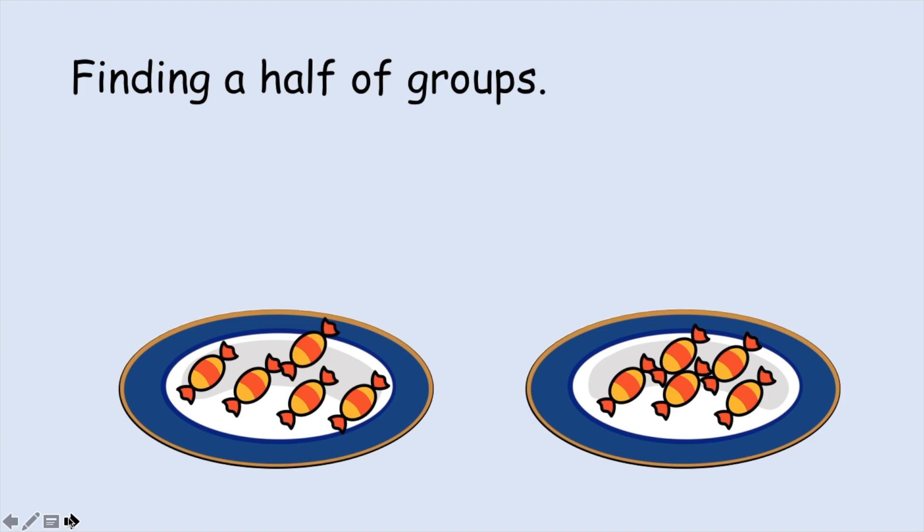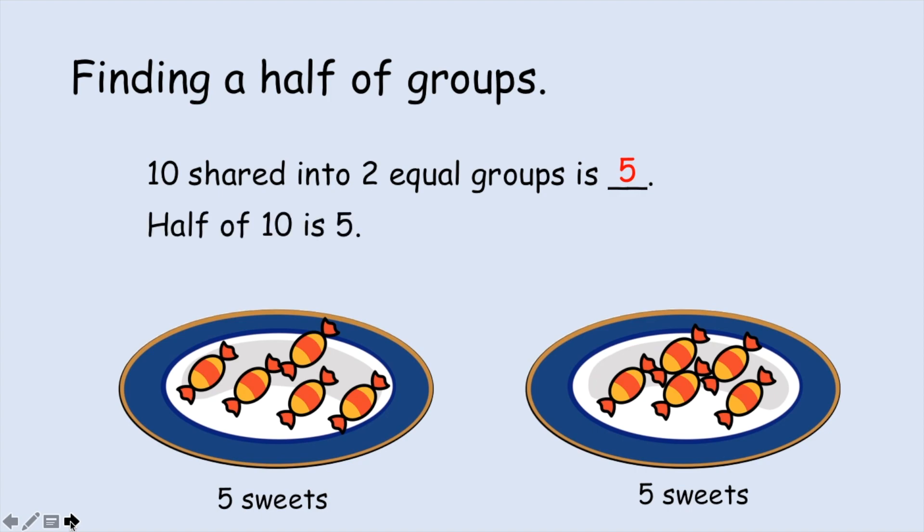How many sweets do I have on each plate? One, two, three, four, five. One, two, three, four, five. So I have five sweets and five sweets. Ten shared into two equal groups is five. We can also say half of ten is five.